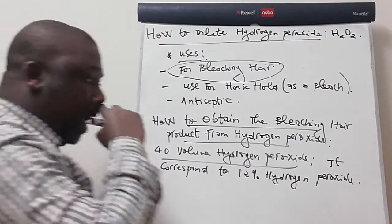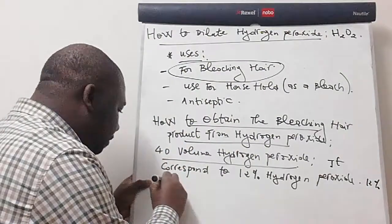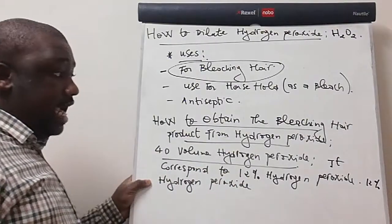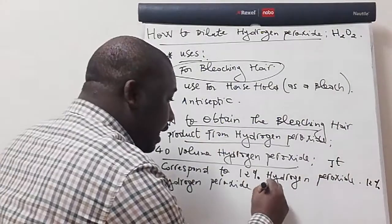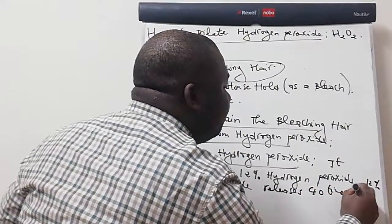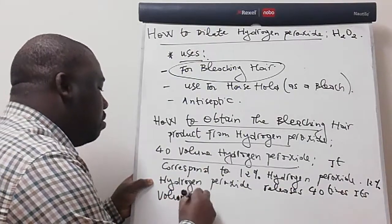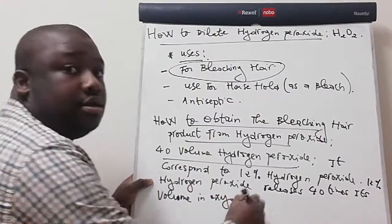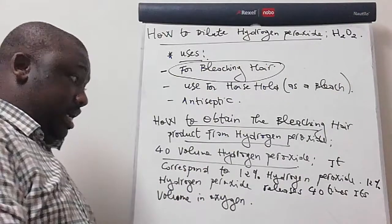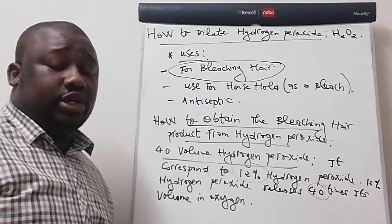Because the 12% hydrogen peroxide releases 40 times its volume in oxygen. This is very important information for you to know. The 40 volume actually corresponds to 12% hydrogen peroxide.